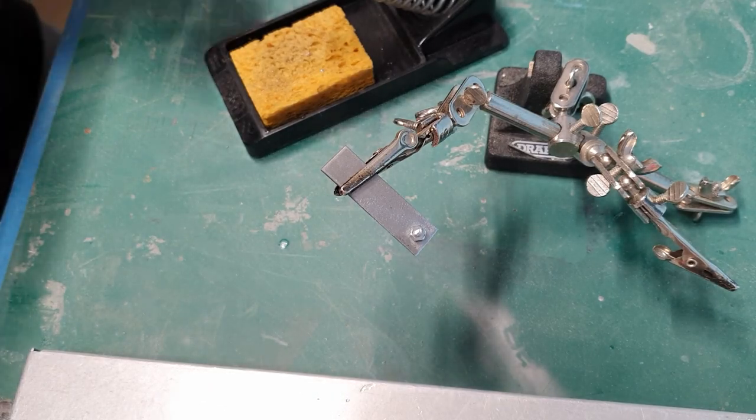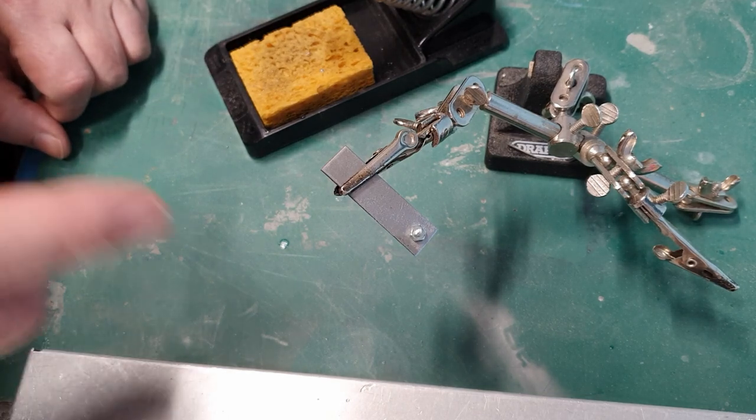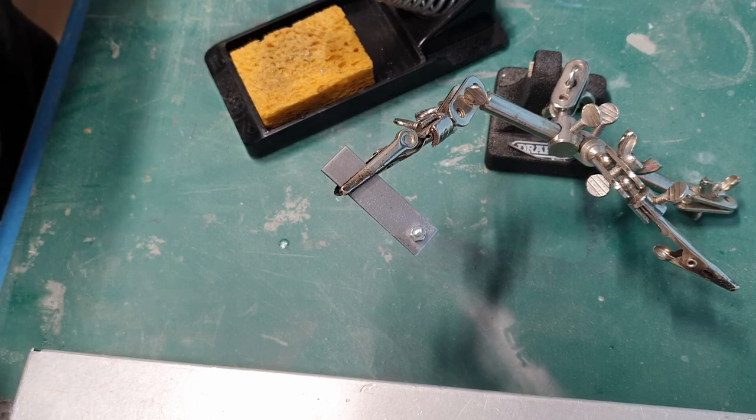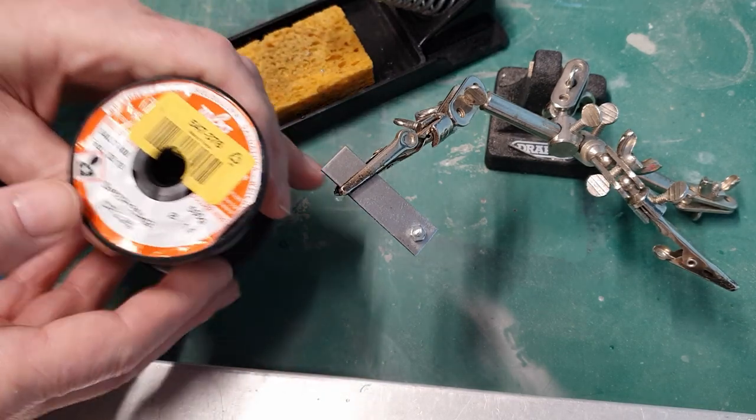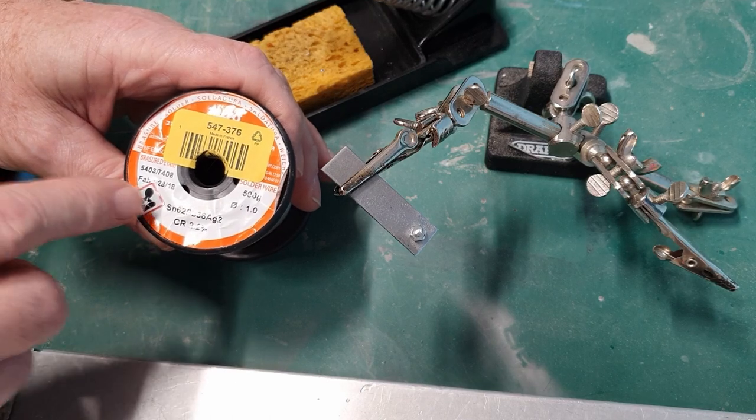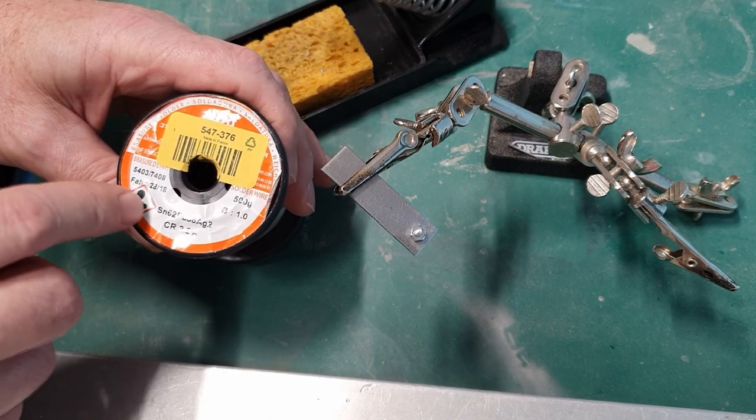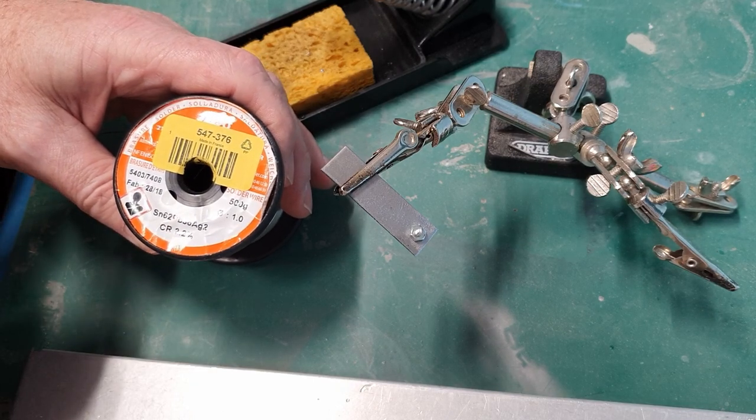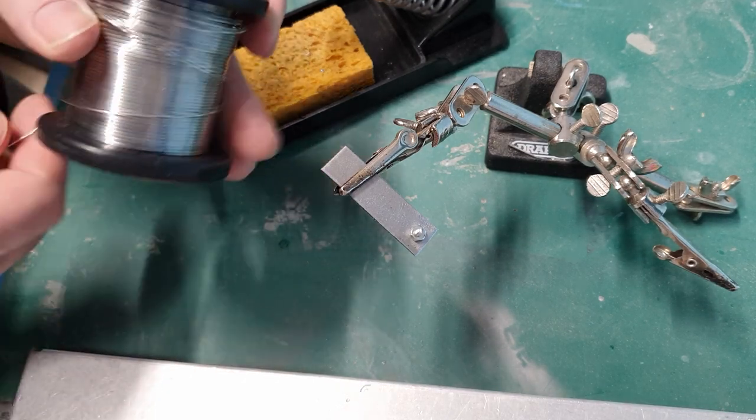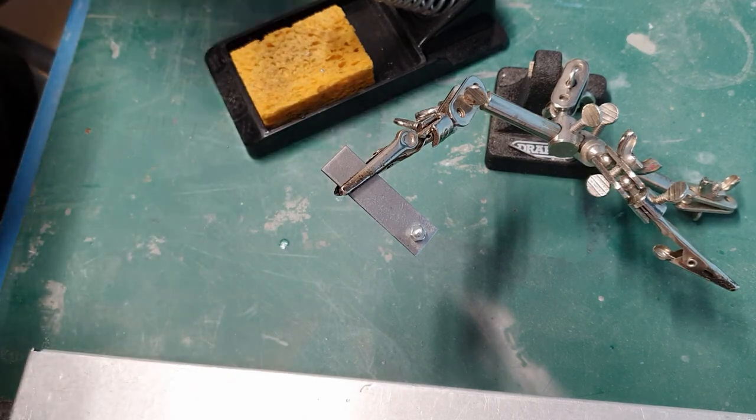Back on the theme of not wishing to teach you to suck eggs, I'm just going to do a bit of soft soldering. I've got some very nice solder. If you really want to make the best joints, you need a high silver content in your solder. This has got 2% silver in it. It's expensive.